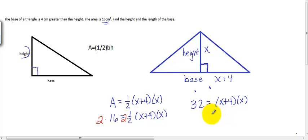Now, whenever we have parentheses, it's a good idea to distribute through those parentheses. In this case, that's going to give us 32 equals x squared plus 4x.